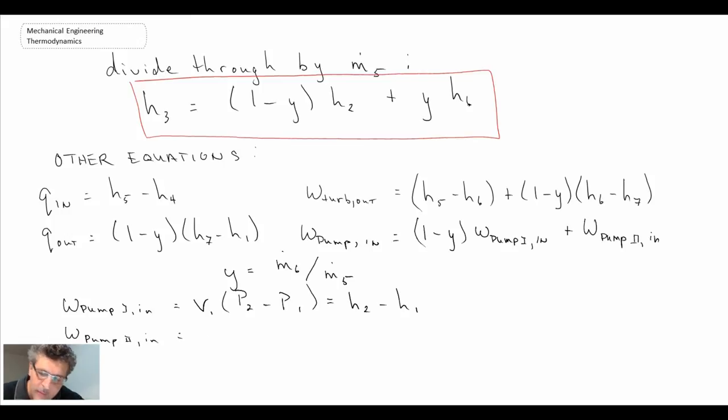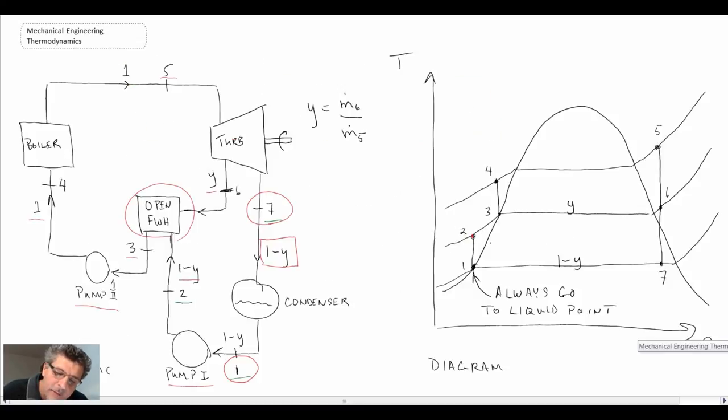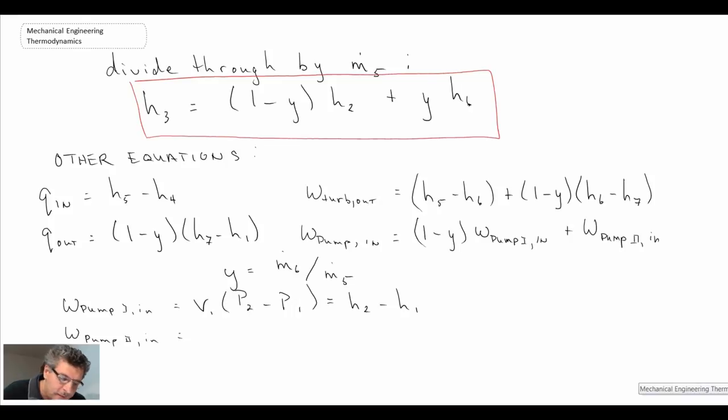And for pump 2, let's go back and look at our schematic. Now pump 2 is here, and we're going from state 3 up to state 4, and so what we'll need to do is take the specific volume at state 3, in our steady flow work equation. And then it's the pressure change. And that would be equal to H4 minus H3.